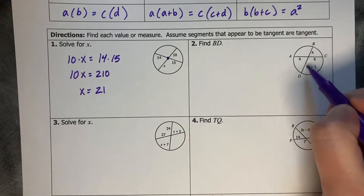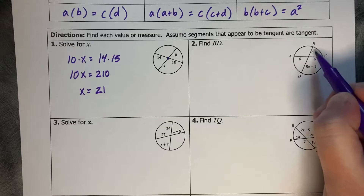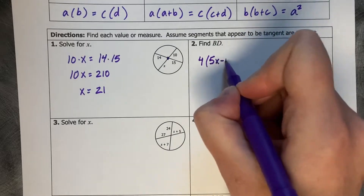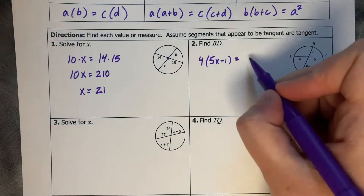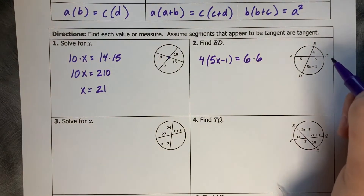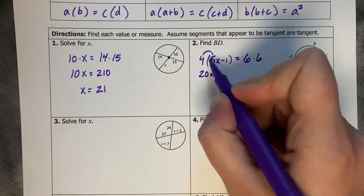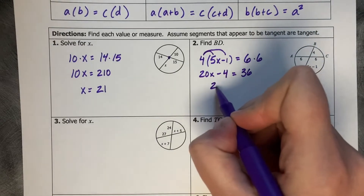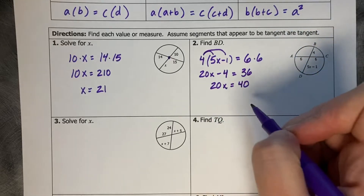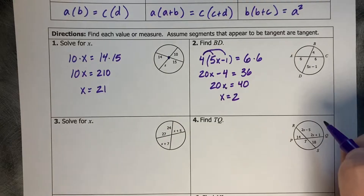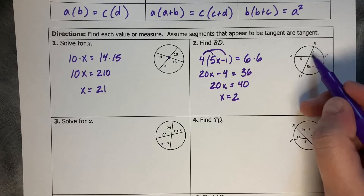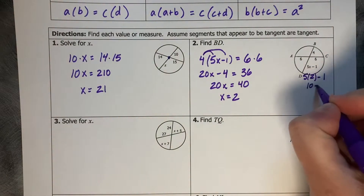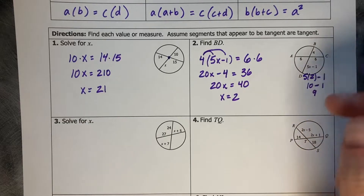Find BD. They want to know the whole length of this segment, so we're going to do part times part and part times part: 4 times (5X minus 1) equals 6 times 6. Distribute: 20X minus 4 equals 36. Add 4, then divide by 20, so X equals 2. But we want the length of BD, so we plug in: 5 times 2 minus 1 equals 9, and 9 plus 4 is 13.